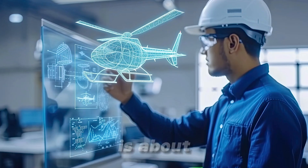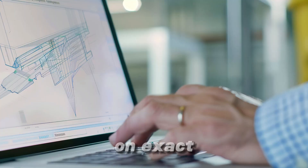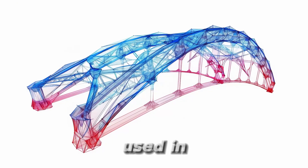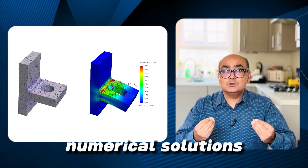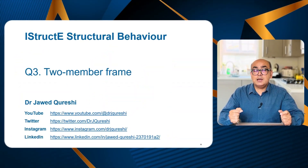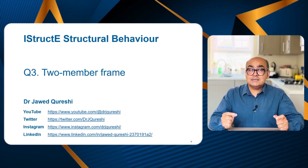Qualitative structural analysis is about understanding structures without relying on exact calculations. It involves deformed shapes, load paths, and bending moment diagrams. We don't need any exact calculations. It is used in initial design of structures and for comparing numerical solutions with approximate ones.